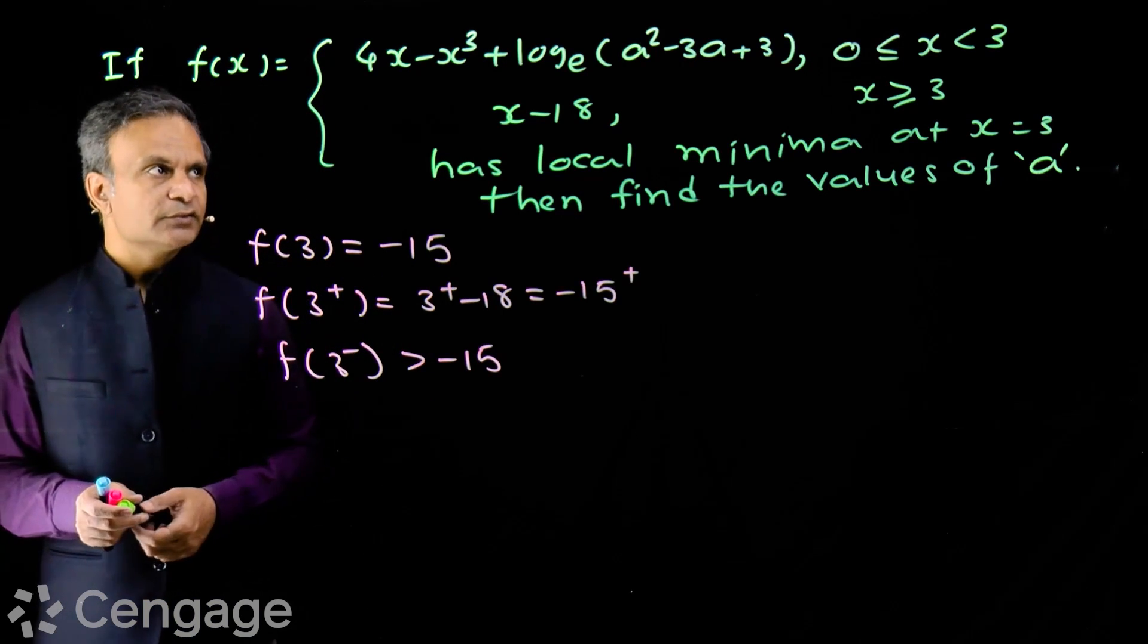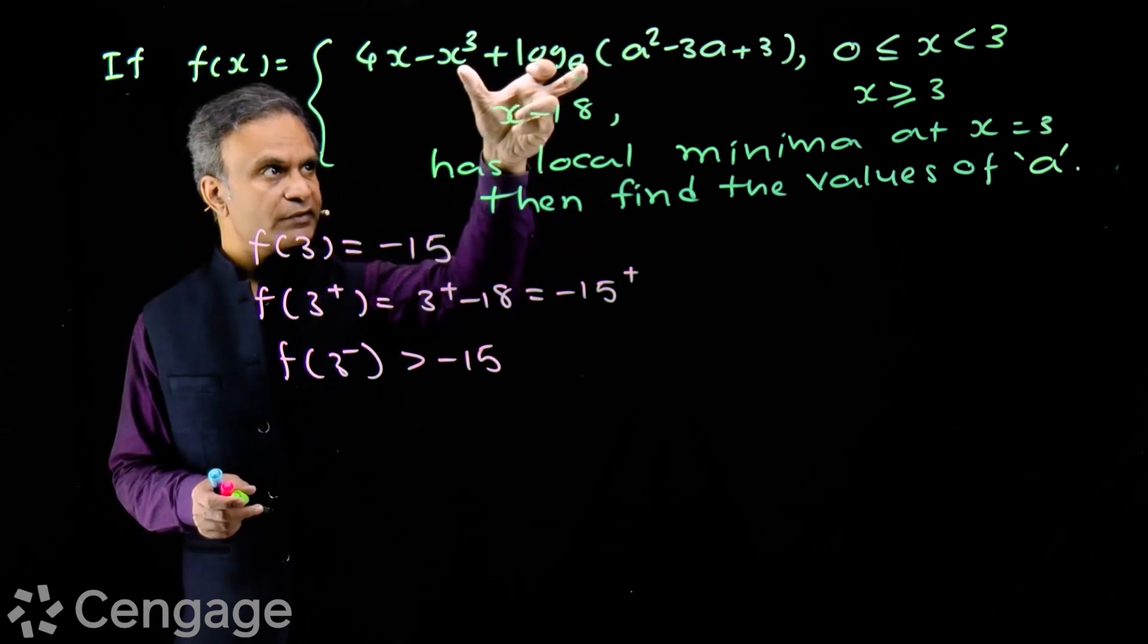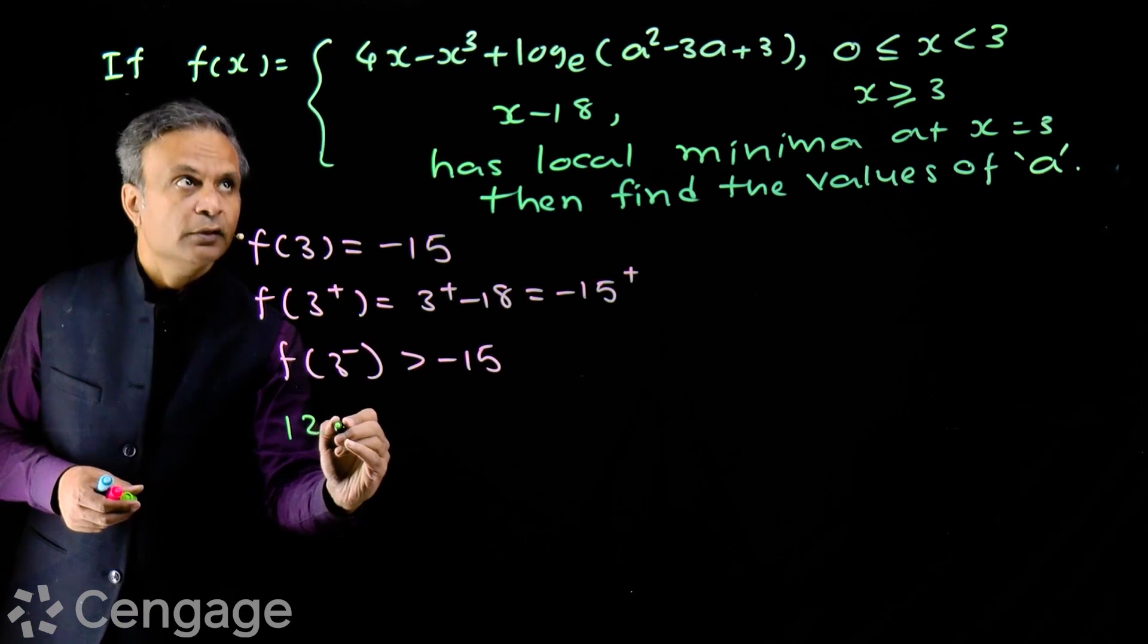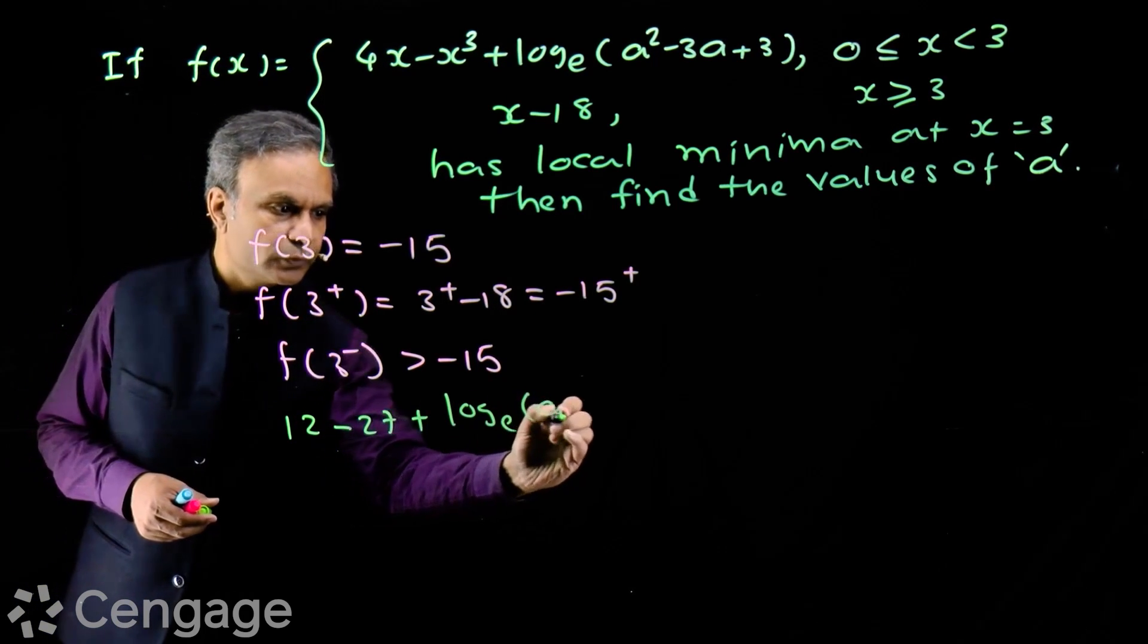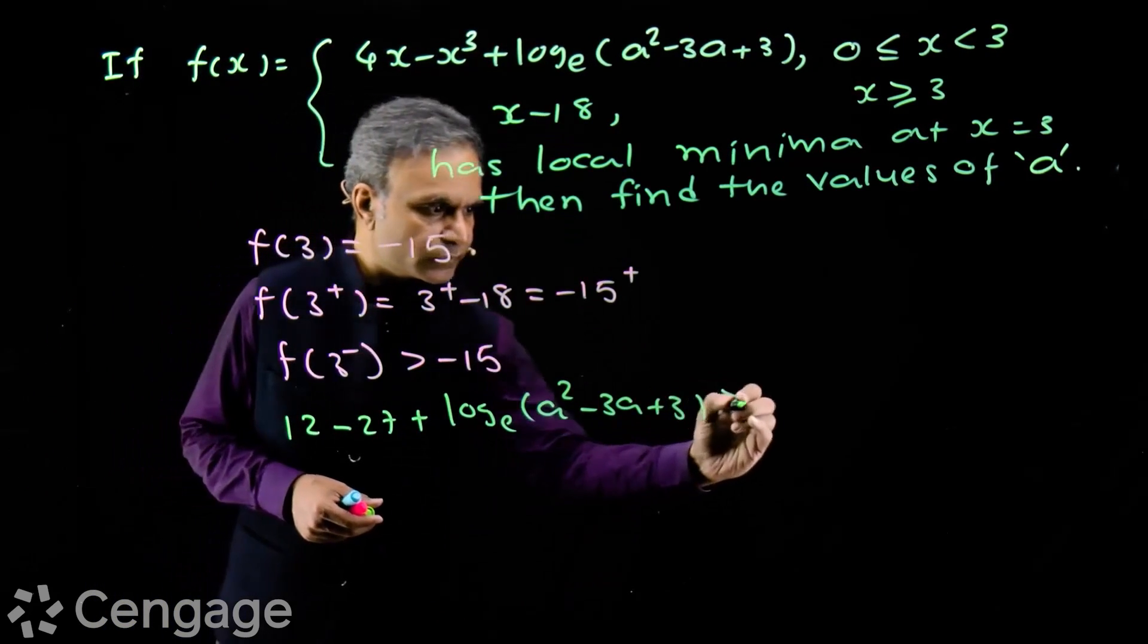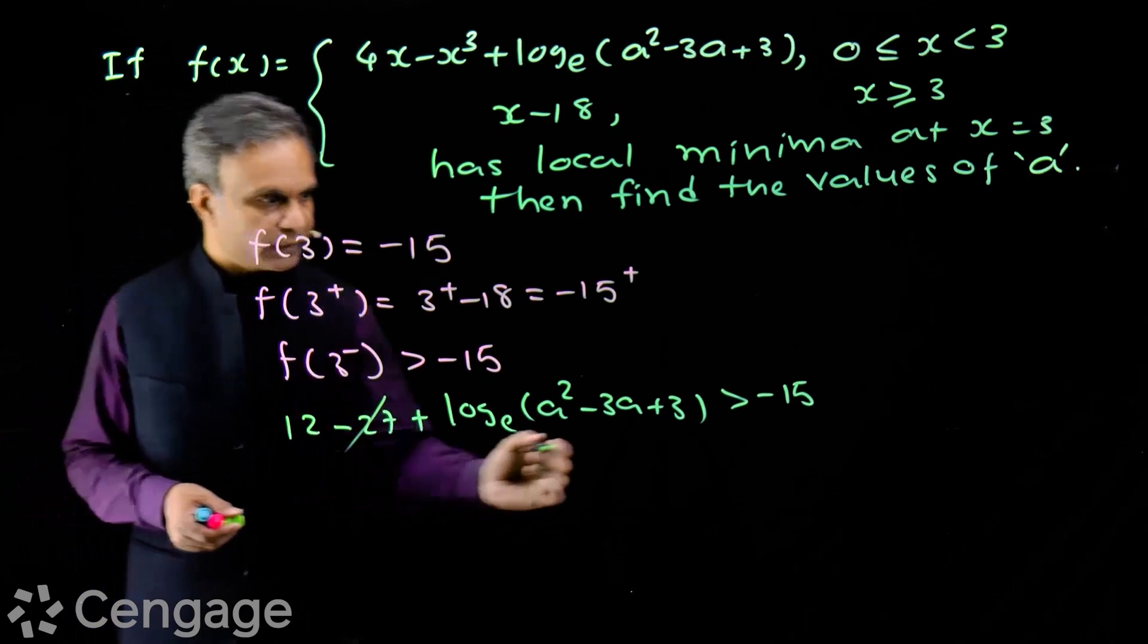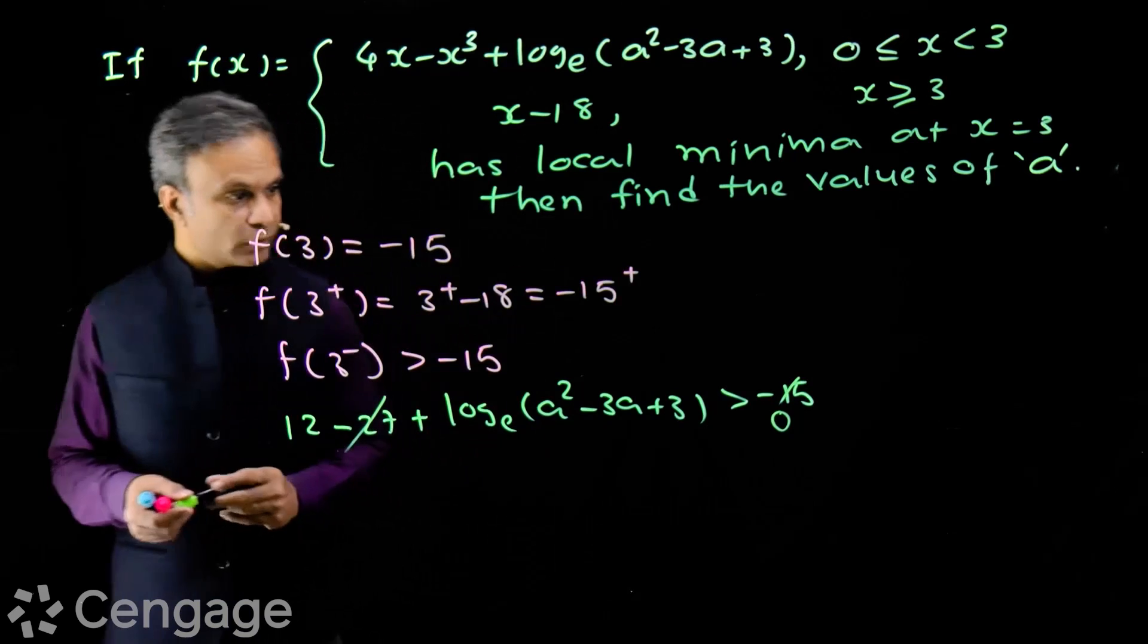Now for 3 minus, for x less than 3, we will use this branch function. We get, putting x equals 3, we get 12 minus 27 plus log of a square minus 3a plus 3. This is greater than minus 15. This is minus 15. So from both sides minus 15 gets cancelled out. So we get this greater than 0.